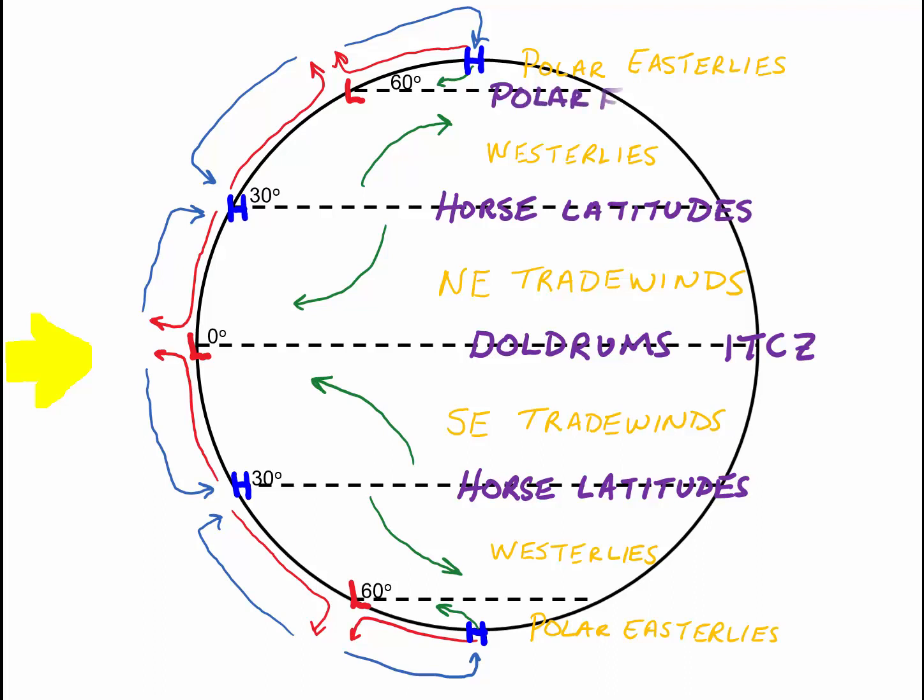At the 60 degree zone in the northern hemisphere, we have the area called the polar front. This is a location that we will explore much more as we go on further into meteorology. But there is a polar front at 60 degrees north, also a polar front at 60 degrees south latitude.